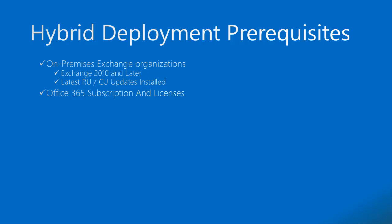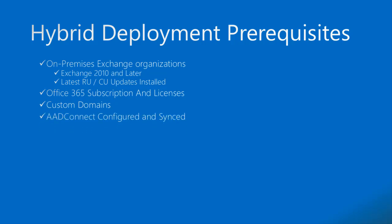We need one Global Administrator account for Office 365 to complete this hybrid setup. We need to add custom domains in the Office 365 tenant and complete DNS verification before starting the hybrid configuration wizard. AAD Connect must be configured in the on-premises environment and sync cycles should be working properly and regularly, without errors.